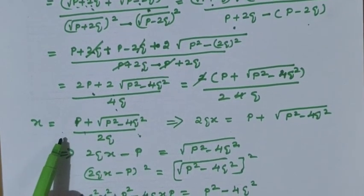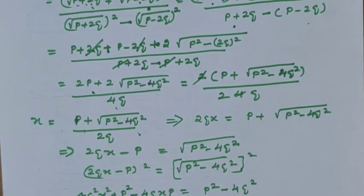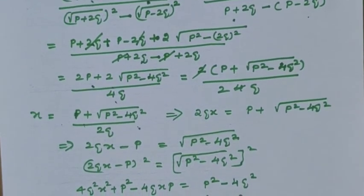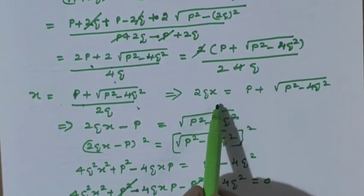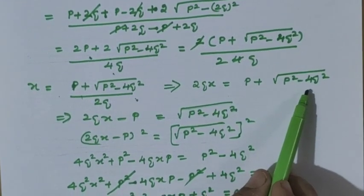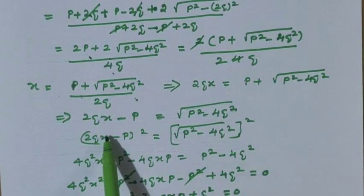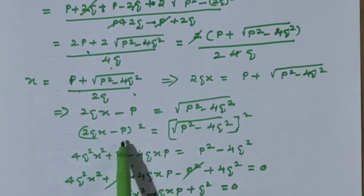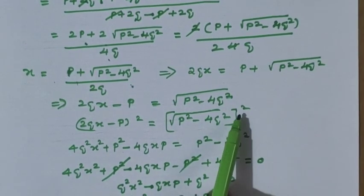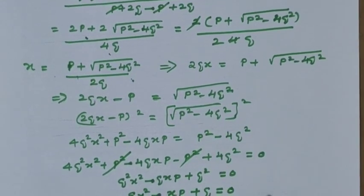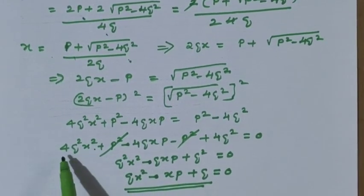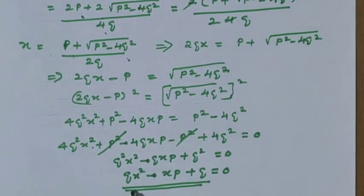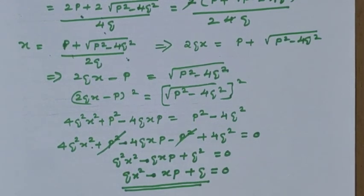We have calculated x. Cross multiply: 2qx equals p plus root of p squared minus 4q squared. Bring p to this side and square: 2qx minus p whole square equals root of p squared minus 4q squared whole square. This removes the root. Bring all terms to one side, simplify and cancel common terms — 4 as well as q we can cancel. The final answer: qx squared minus xp plus q equals 0, which is the required equation.